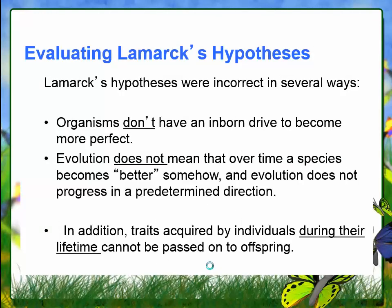We know that Lamarck's hypotheses were incorrect. Organisms don't have an inner need to become more perfect, and evolution does not mean a species becomes better or that change is predetermined. We do know that when organisms change over time, they become better adapted to their environment as it changes. We also know that individuals with acquired traits do not pass them on to their offspring — that would be like lifting weights to build big muscles and expecting your children to be born with big muscles. They would have to lift weights too.